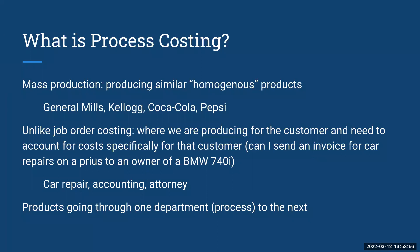It's a similar product — homogeneous products are the same. So process costing is used for mass production. Now, as opposed to this, why don't we use job order costing? Well, for job order costing, the focus is on our customer.